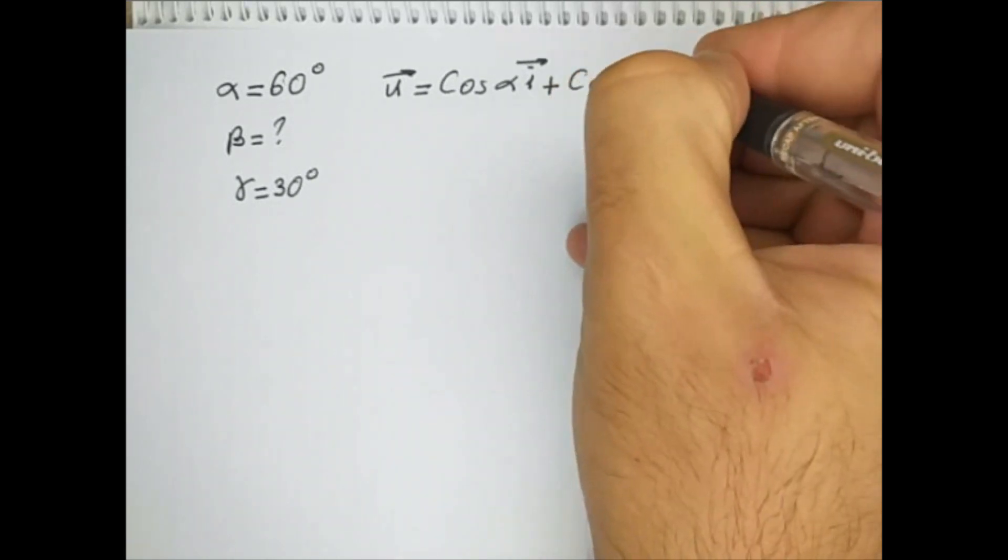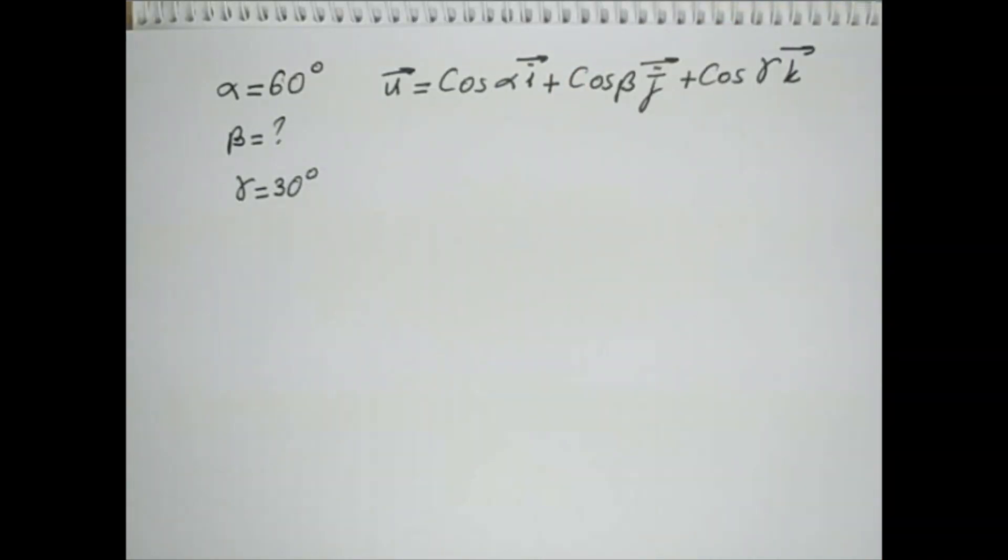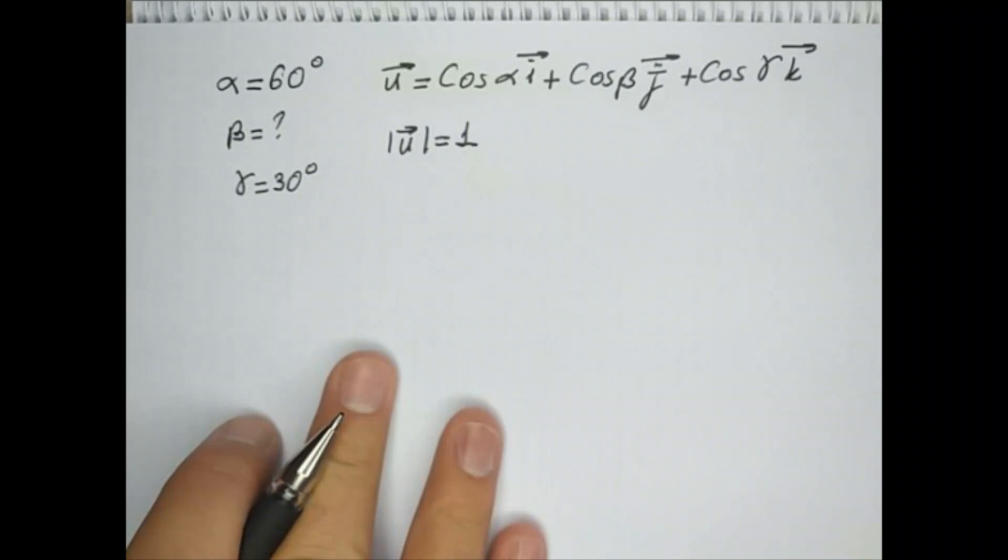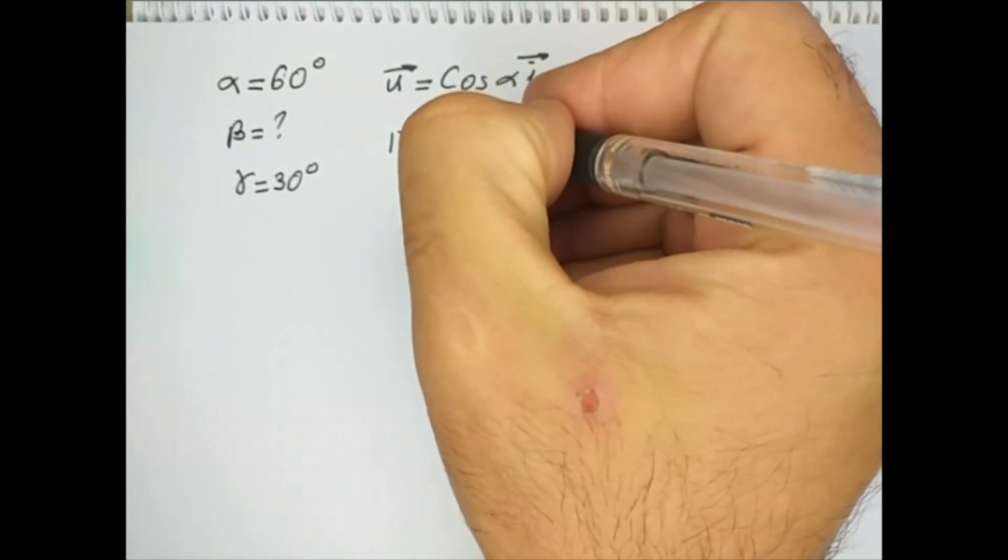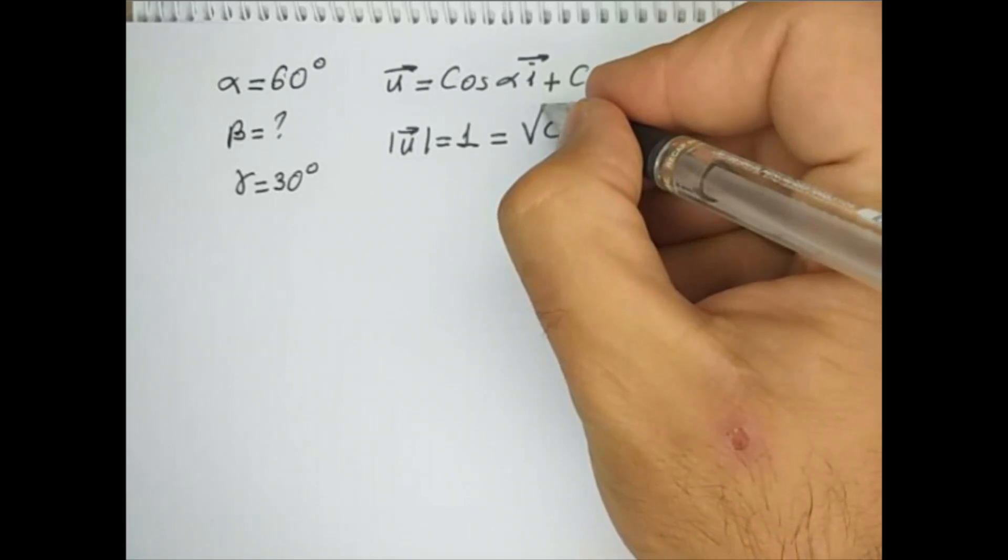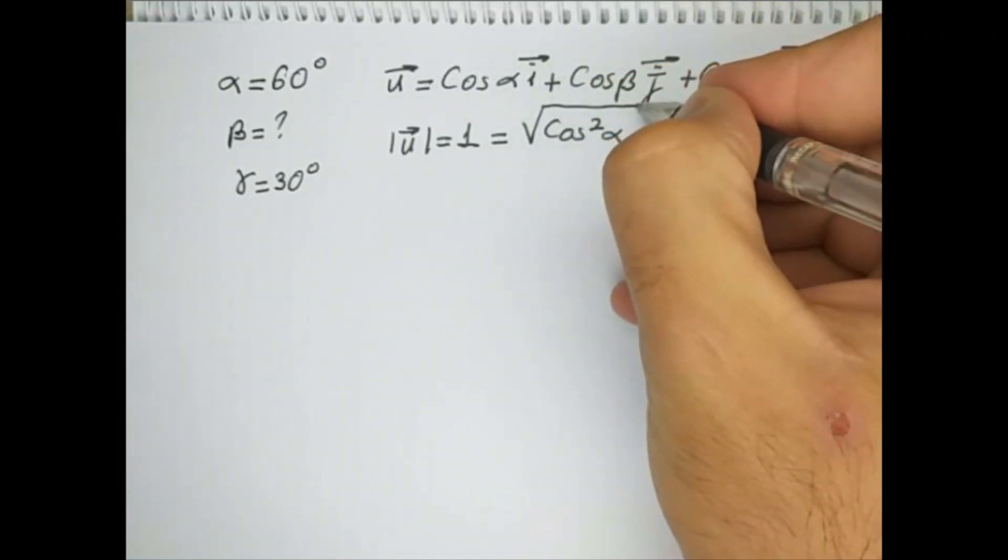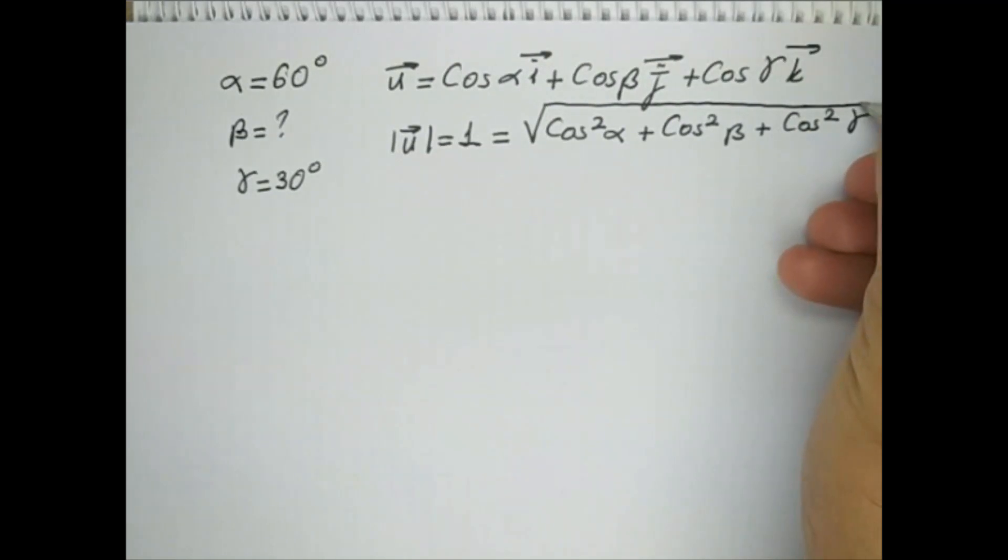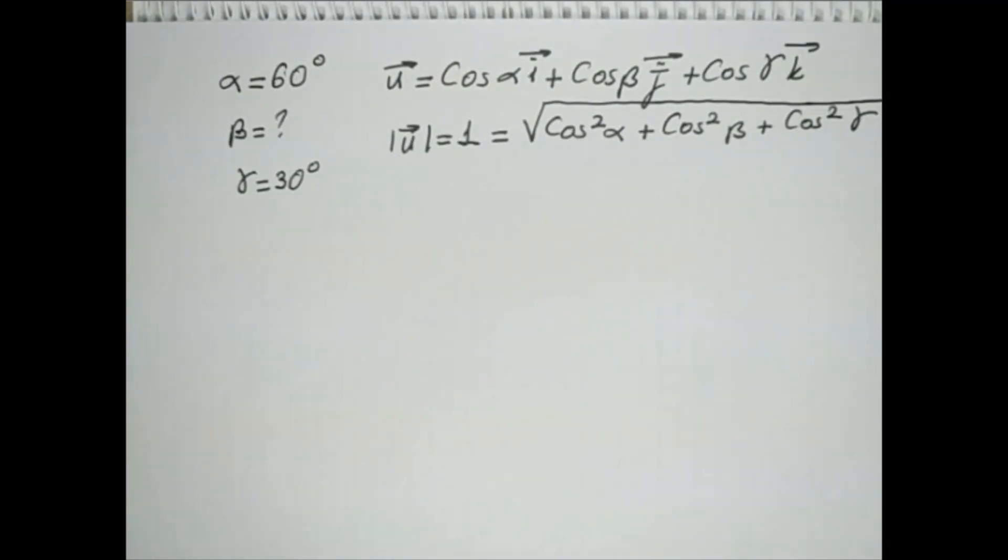From here, we can easily write this expression. This has to be equal to square root of cosine square alpha plus cosine square beta plus cosine square gamma. Now if we take cosine beta equals square root of 1 minus cosine square alpha minus cosine square gamma.